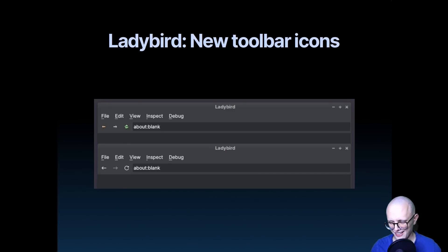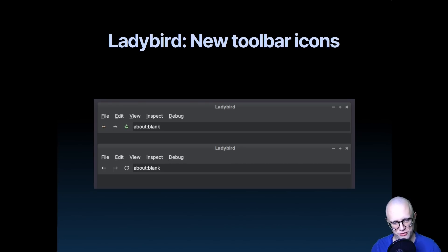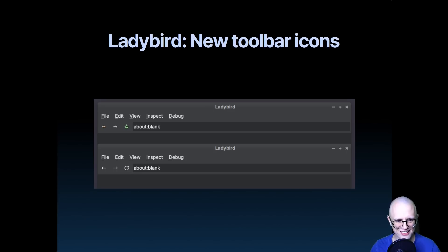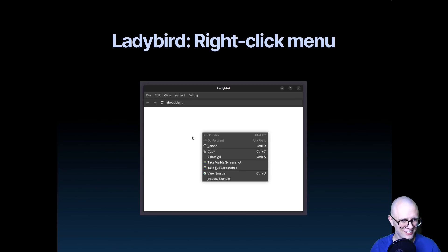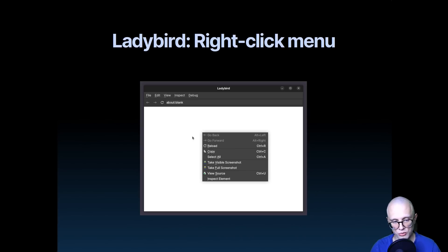We'll start with the visual fluff. I made some new toolbar icons — the old pixel art stuff we had from Serenity looks great on Serenity, but on other systems these vector icons just fit in better. So I learned enough Inkscape to draw these, and this is how the toolbar looks now. Tim also added a context menu for right-clicking, and I don't know how we made it this far without a right-click context menu, but now we have one. Thank you, Tim.